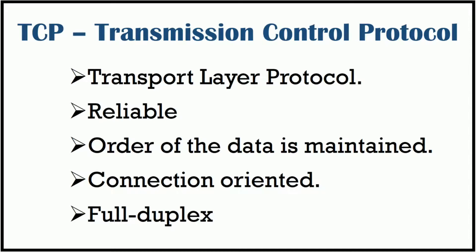When data travels across the internet, it doesn't exist in the same format and changes its form for proper routing so that the data can reach the correct destination. The protocols used for this are TCP and UDP — Transmission Control Protocol and User Datagram Protocol. Here we will first understand what Transmission Control Protocol is.